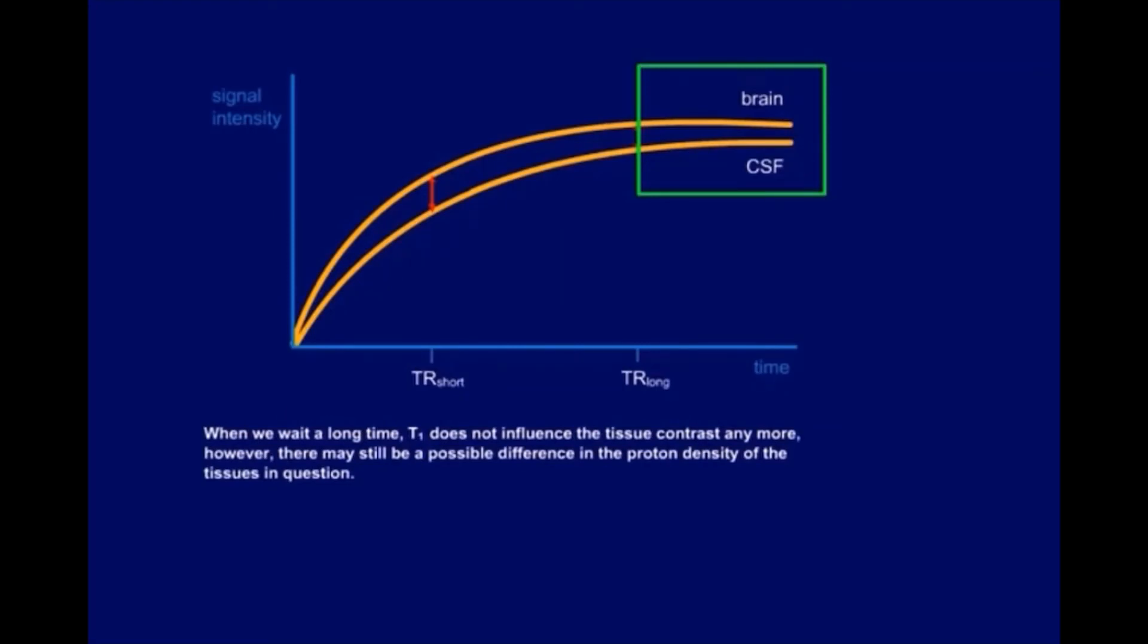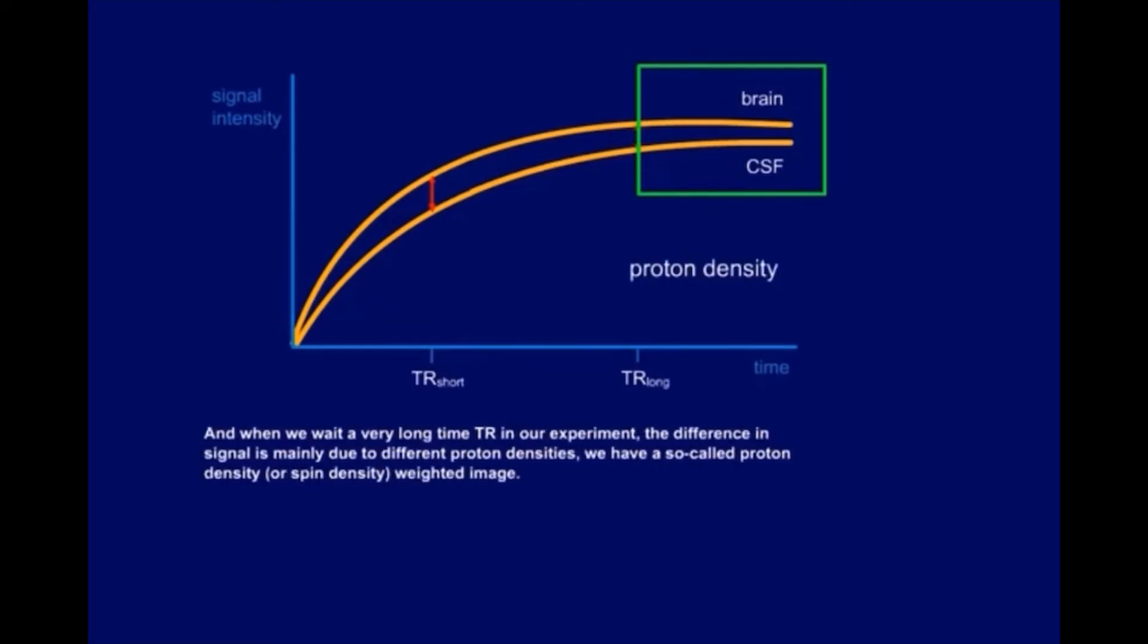When we wait a long time, T1 does not influence the tissue contrast anymore. However, there may still be a possible difference in the proton density of the tissues in question. And when we wait a very long time TR in our experiment, the difference in signal is mainly due to different proton densities. We have a so-called proton density or spin density weighted image.